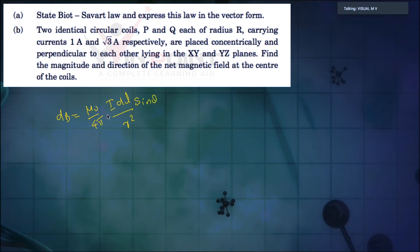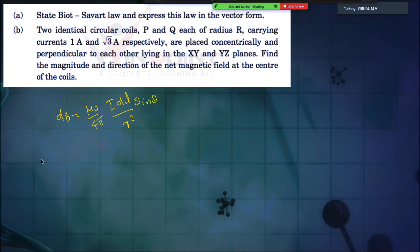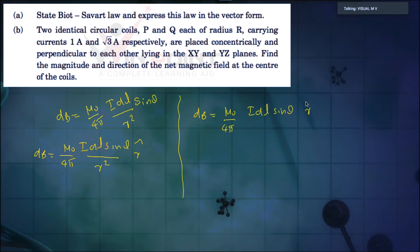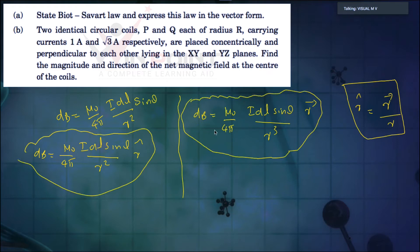The equation is dB = (μ₀/4π) × (I dl sinθ / r²). In vector form, we can write dB = (μ₀/4π) × (I dl sinθ / r²) × r̂. Here r is the magnitude of the vector. There is one more form: dB = (μ₀/4π) × (I dl sinθ × vector r) / r³, because unit vector r̂ equals vector r divided by |r|, giving r³ in the denominator. These two are vector forms, and the first expression is only the magnitude.